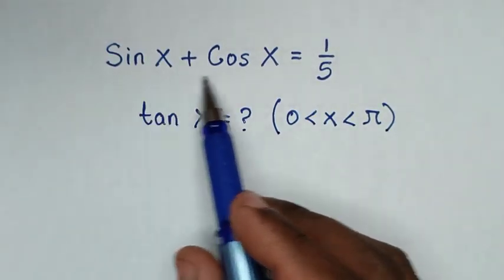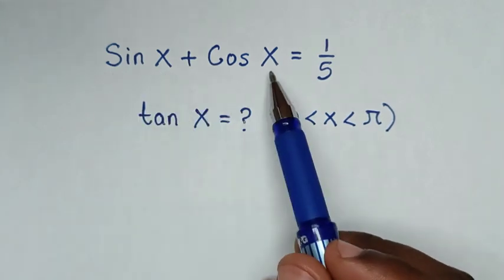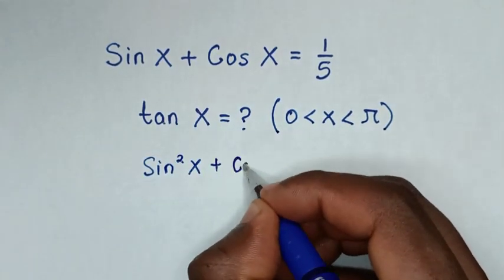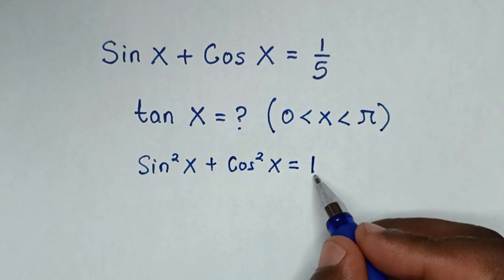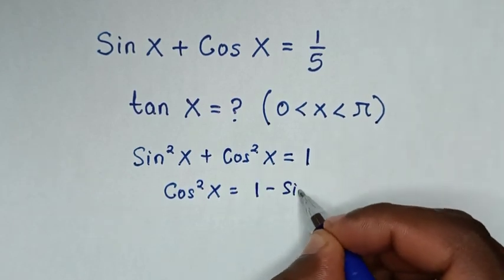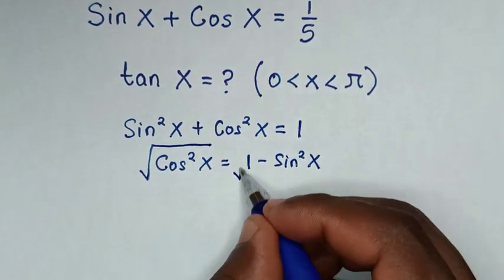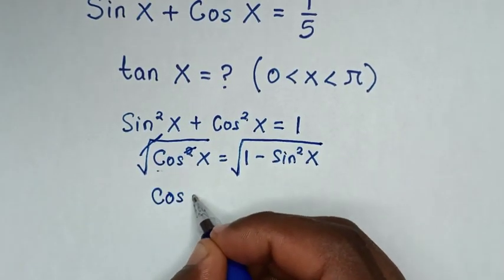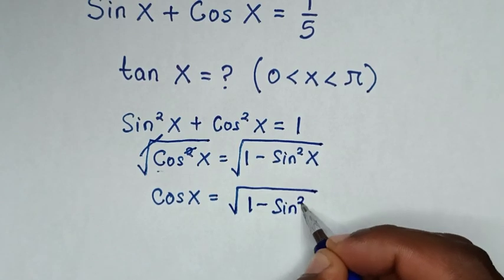From this problem, we express cos x in terms of sin x. We apply the trigonometric identity sin squared x plus cos squared x equals 1. Taking sin squared x to the right side gives cos squared x equals 1 minus sin squared x. Applying square root to both sides, cos x equals the square root of 1 minus sin squared x.